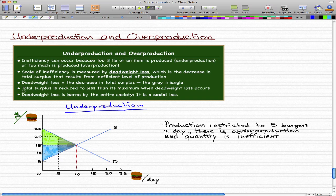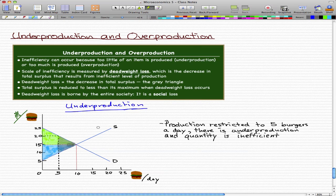That means that our total surplus is reduced to less than its maximum when our deadweight loss occurs, and this is a social loss, and it is borne by the entire society. And this is what inefficient production can do, and it's not really a good thing.